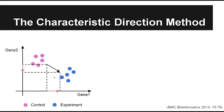Looking at the projection of this direction onto the two genes, the direction is represented as a vector of two components: the first is the projection on gene one and the second is the projection on gene two. The absolute value of gene one is larger than gene two, which means the experiment is more different from control on gene one than gene two. So gene one contributes more to the difference — in other words, gene one is more differentially expressed than gene two.